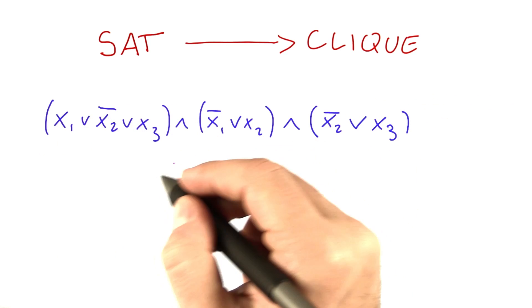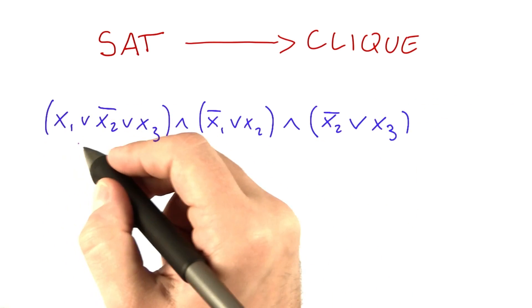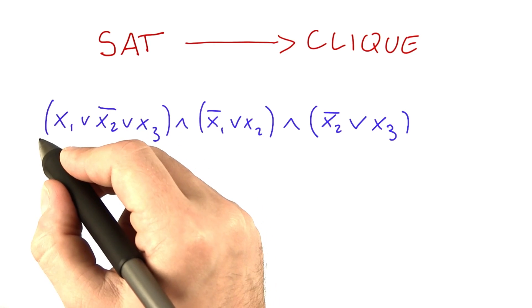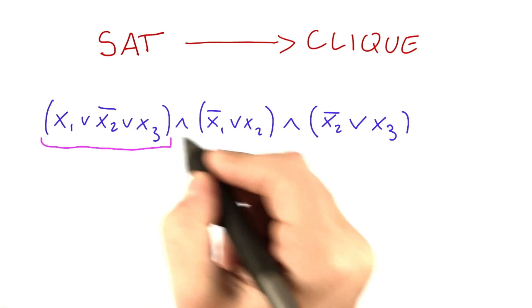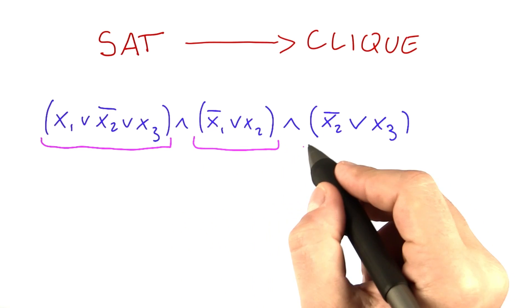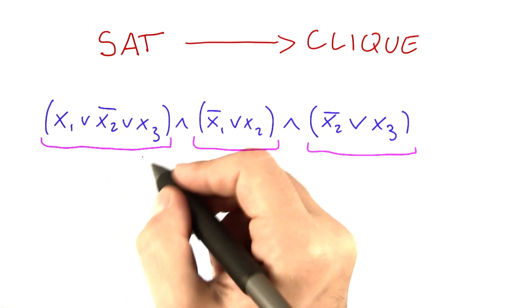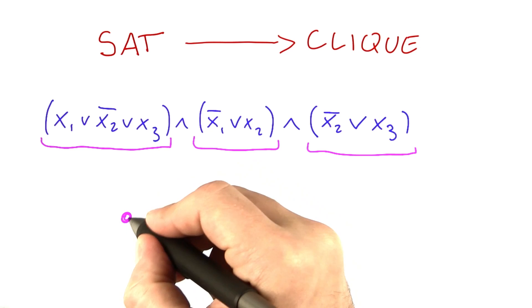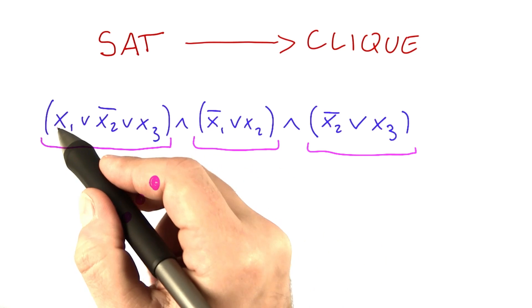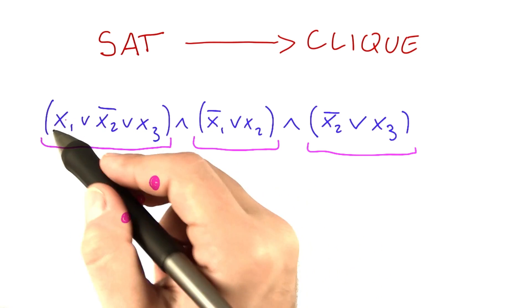And the way we're going to transform this into a network is we're going to do groups of vertices for each clause. So for this clause here, for this one here, and this one here. So this is our first group of vertices, and we're going to have one vertex for each variable in that clause.